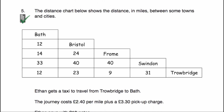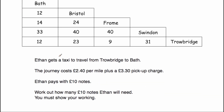Question number five — the distance chart below shows the distances in miles between some towns and cities. We've got Bath, Bristol, Frome, Swindon and Trowbridge, with the distances between them. Ethan gets a taxi from Trowbridge to Bath — Trowbridge is here and Bath is here — so that distance is 12 miles.